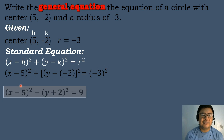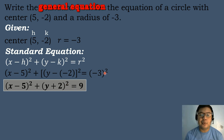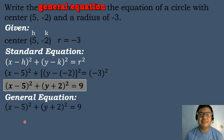We will simplify. Bring down x minus 5 to the second power, plus the quantity of y — negative times negative gives positive 2 — raised to the second power, equals negative 3 to the second power, which is equal to positive 9. So this will be the standard form of the equation of the circle. After computing the standard form, we will expand this equation to get the general form. We have the quantity of x minus 5 to the second power plus the quantity of y plus 2 to the second power equals 9.